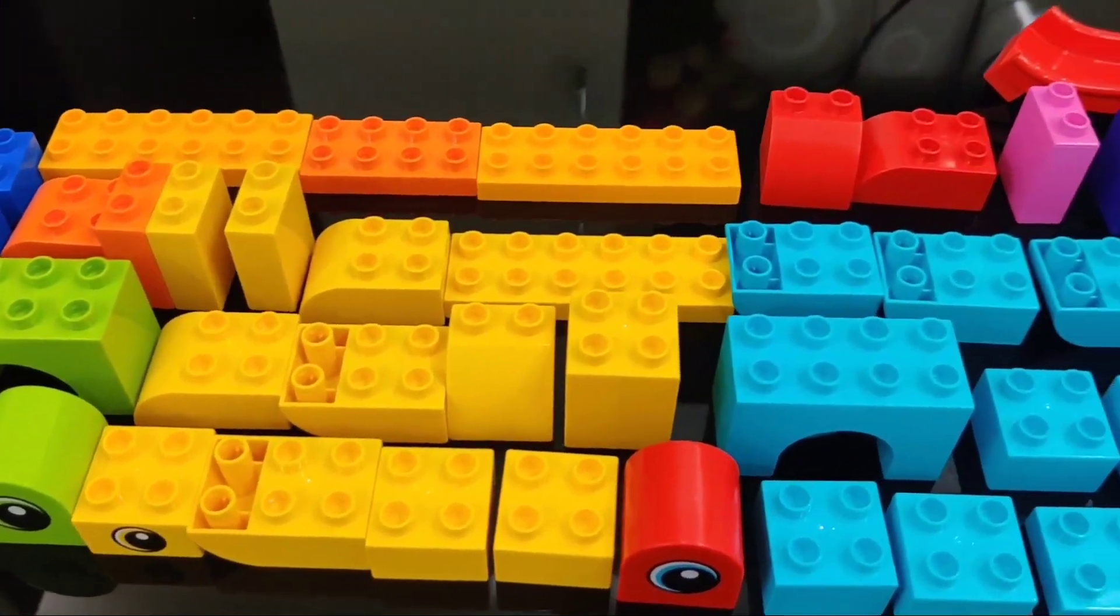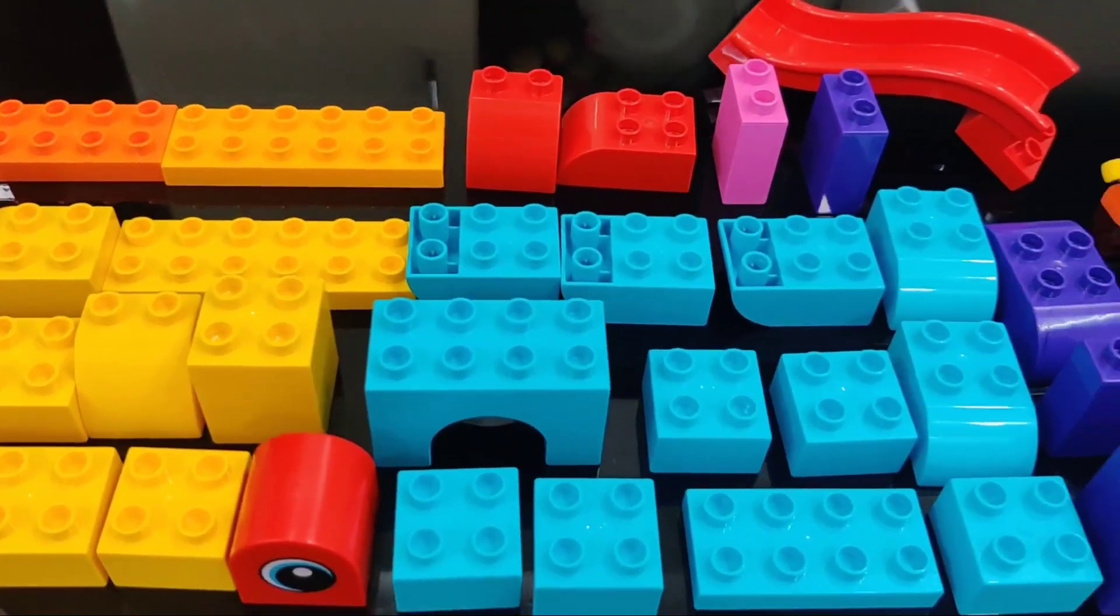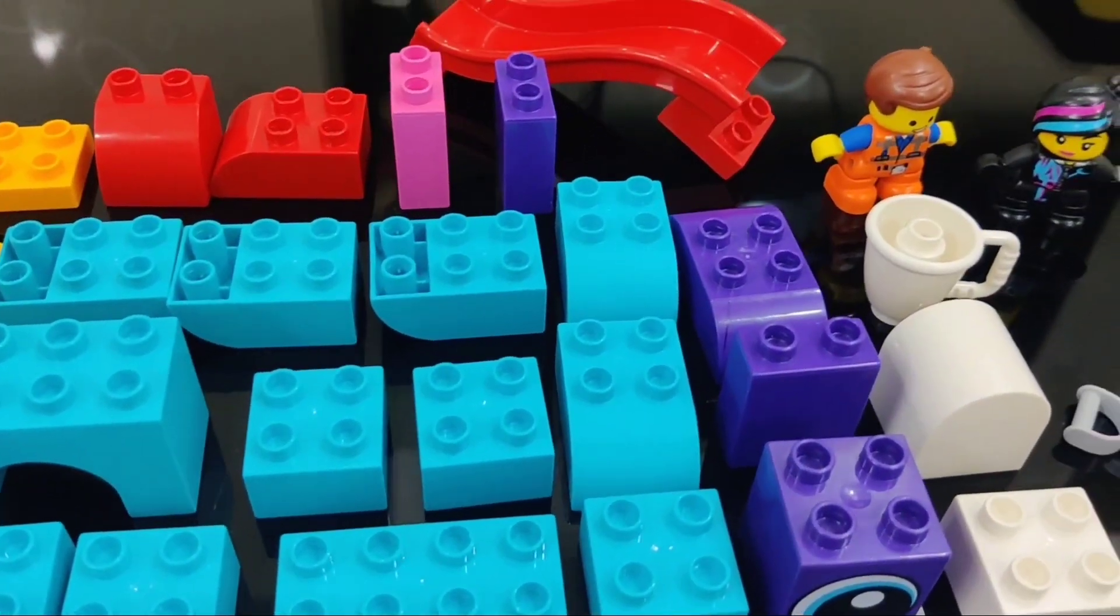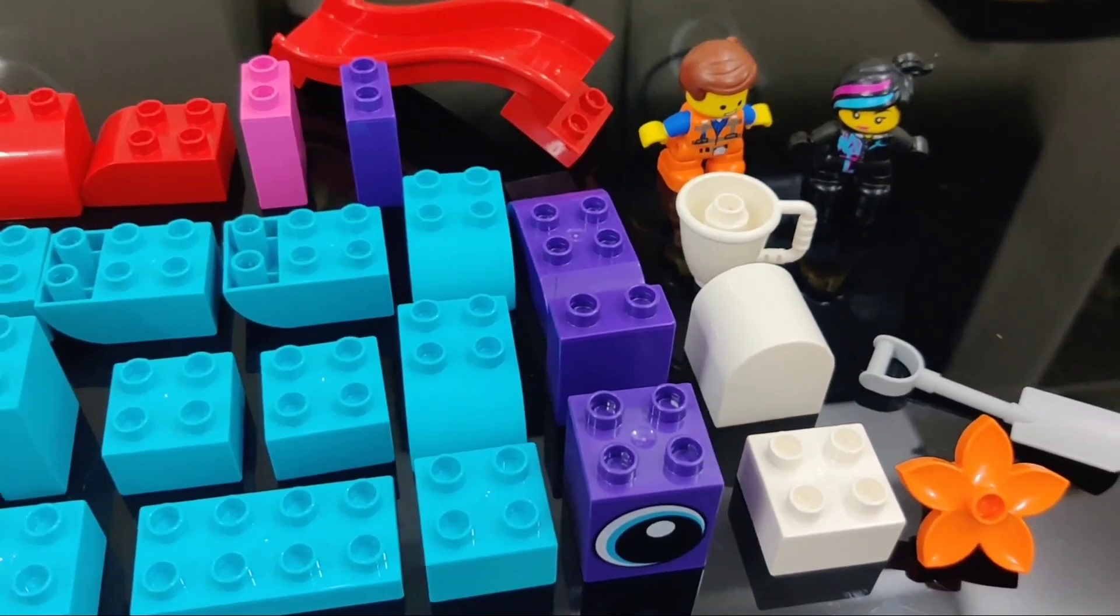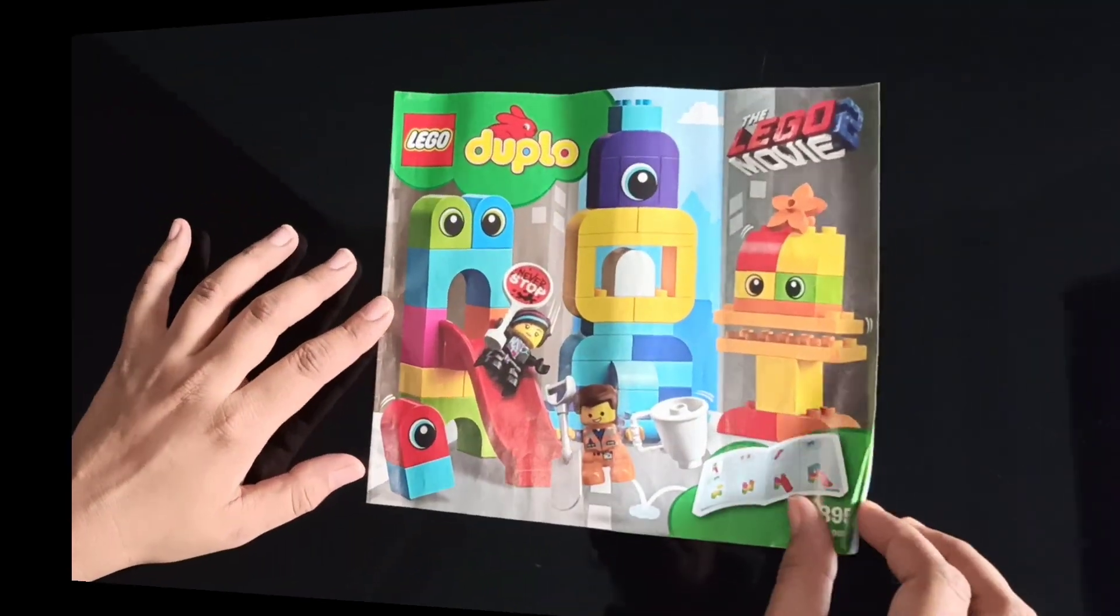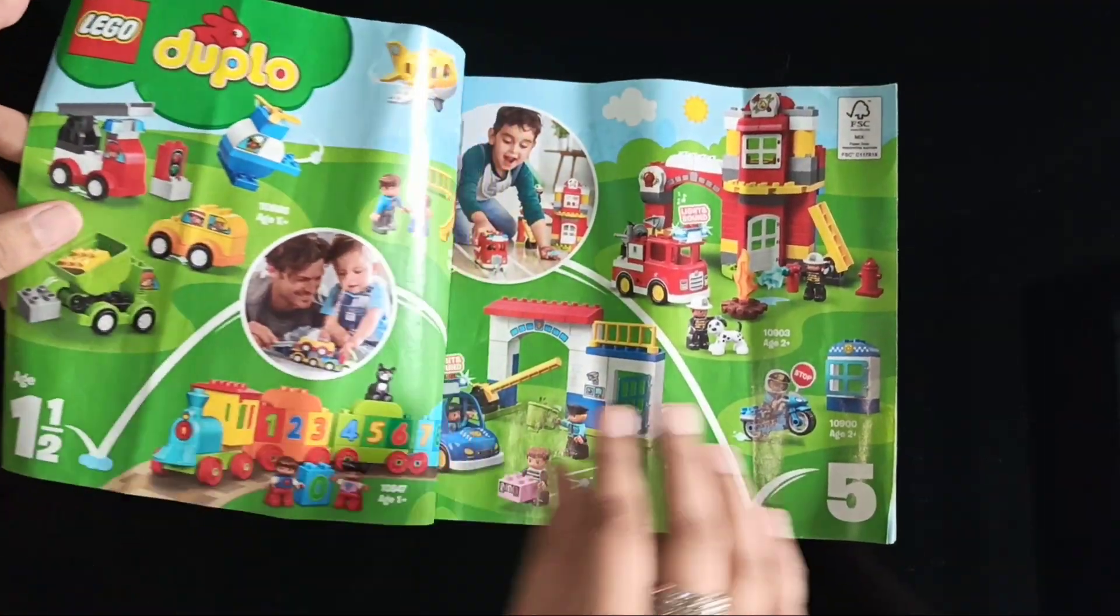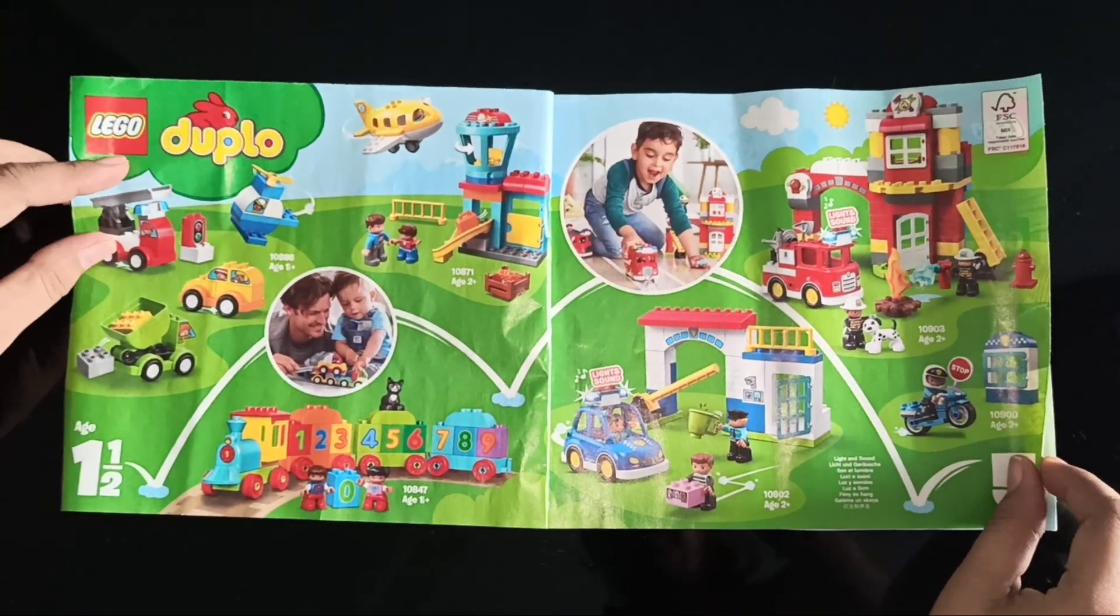So here comes two adorable mini creatures, Emmett and Lucy, from DUPLO Planet. Here is the LEGO DUPLO traditional manual which is given with this set, and it shows various other products as well as how the child is creating his own toys or monsters with these blocks.